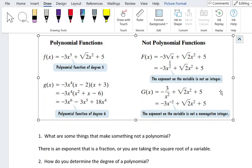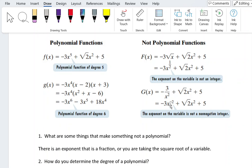Continuing on to the second set here, we have negative 3 over x squared, which is negative 3 times x to the negative 2 power. The exponent on the variable is not a non-negative integer, which is a little bit confusing of a way to say that it is a negative number.